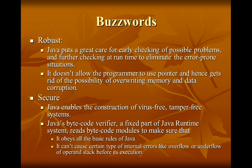Java is robust. Java puts great care into early checking of possible problems and runtime checking to eliminate error-prone situations. It does not allow the programmer to use pointers, and hence removes the possibility of overwriting memory and data corruption.